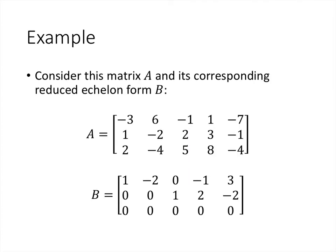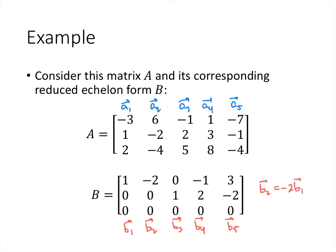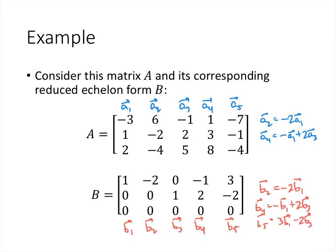For example, consider matrix A, which I've row reduced to its reduced echelon form B. We can see that B2 is negative 2 times B1, which means correspondingly A2 is negative 2 times A1 — and we can check that by looking at the columns of A. We can also see that B4 is negative 1 times B1 plus 2 times B3, so A4 must also be negative 1 times A1 plus 2 times A3. Finally, B5 is 3 times B1 minus 2 times B3, so A5 is 3 times A1 minus 2 times A3.